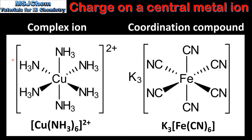A complex ion consists of a central metal ion bonded to ligands by coordinate covalent bonds. The charge on a complex ion is determined by the charge on the central metal ion and the charges of the ligands. A coordination compound consists of a complex ion bonded to counter ions. The counter ions balance the charge on the complex ion, therefore coordination compounds are neutral.